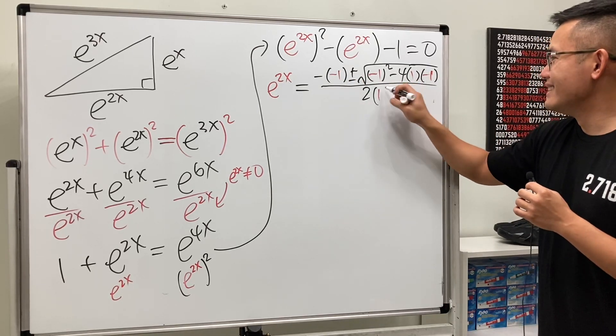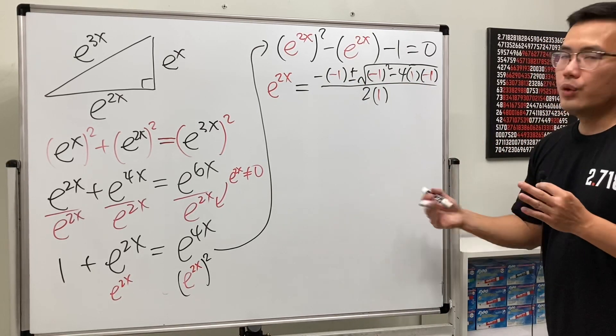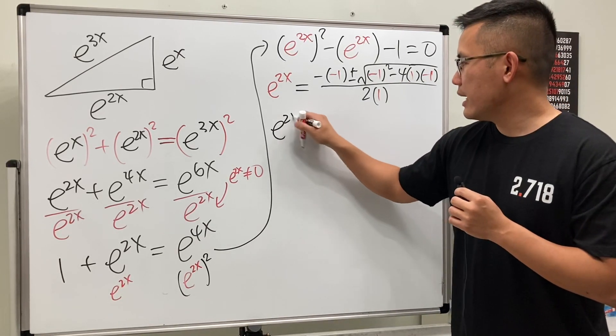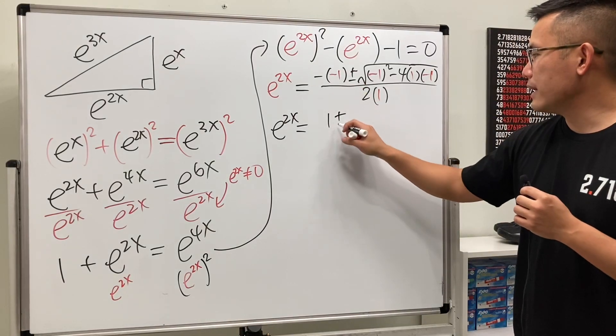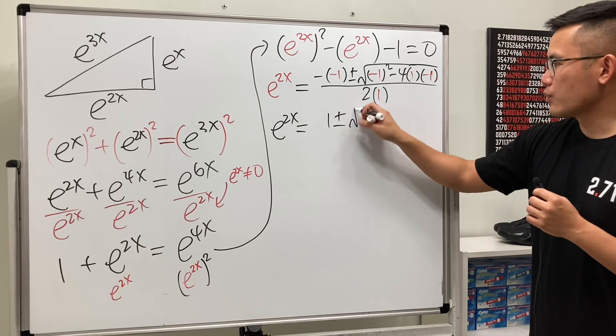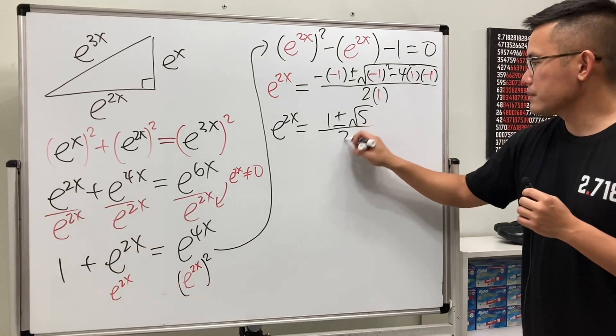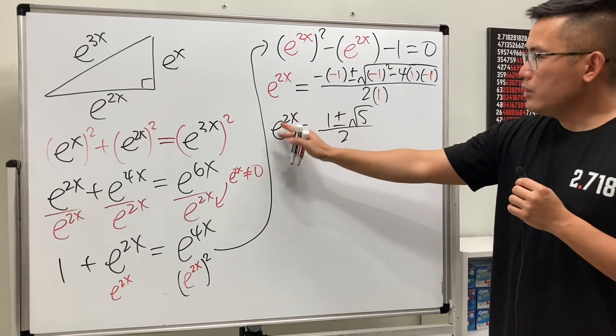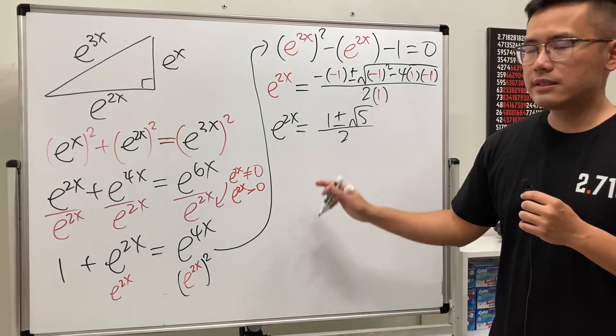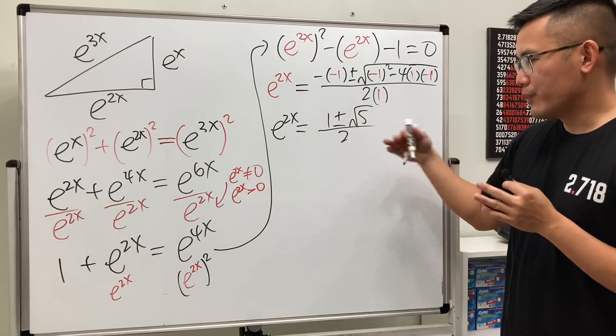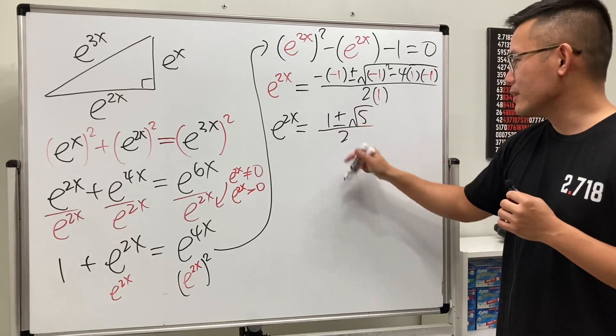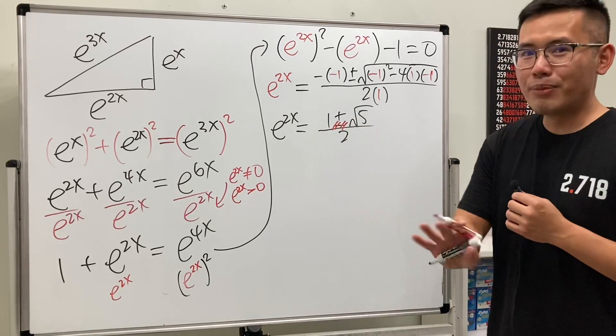And now we just work this out. Have a look, this is e to the 2x, and that's equal to one plus—one minus this is one and then plus four, so it's five in the square root, and then all over two. All right, e to the 2x in fact is always positive, so there's no way for us to be using this negative right here, like one minus square root of five, which is bigger than one. So we will have to get rid of that. No complex triangle here, okay? So just the real values.